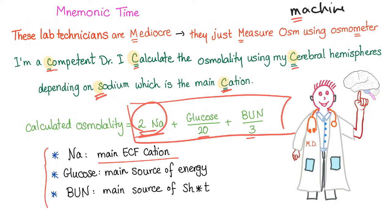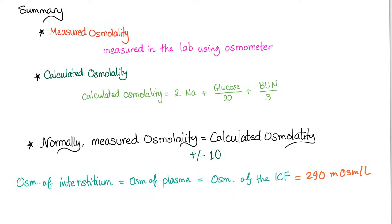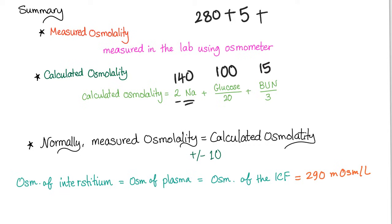Let's summarize and calculate. Measured osmolality uses the lab osmometer; calculated osmolality uses the equation. Normal plasma sodium is 140, glucose is about 100, and BUN is normally less than 20, so let's say 15. Plugging in: 2×140 = 280, plus 100/20 = 5, plus 15/3 = 5. So 280 + 5 + 5 = 290 milliosmoles per liter. Under normal circumstances, measured osmolality should equal calculated osmolality.